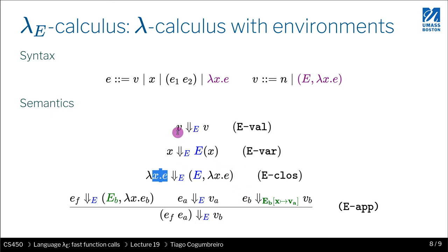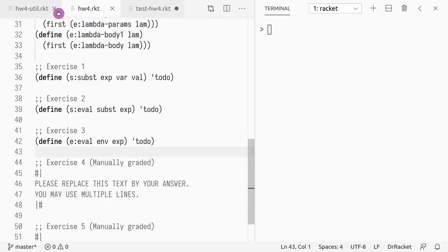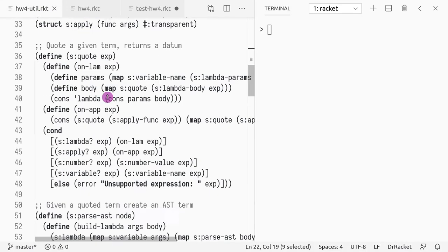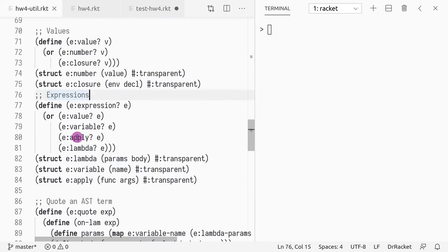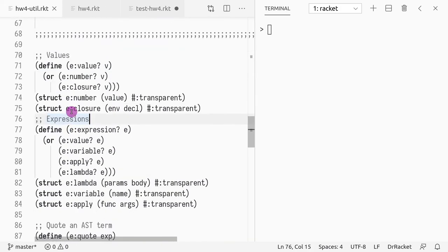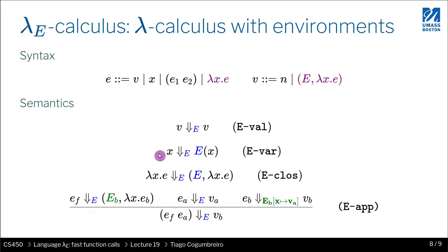The first case says: if the expression is a value, just return that value — very similar to what we had in lambda-s. The second rule says: if the expression is a variable. We can call the variable question-mark function defined by that constructor to check whether the expression is a variable.